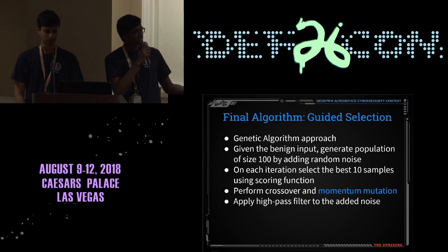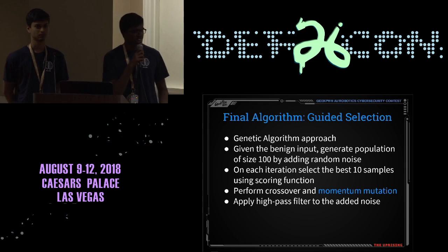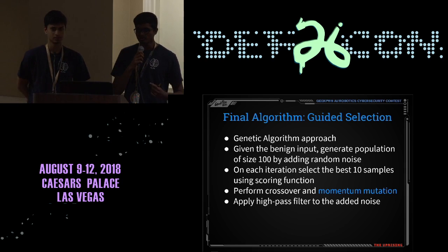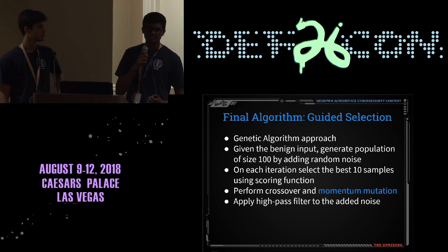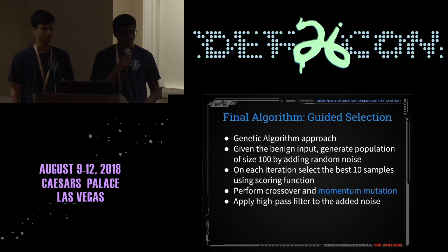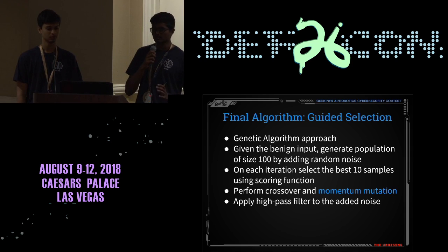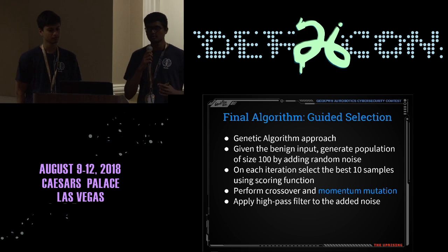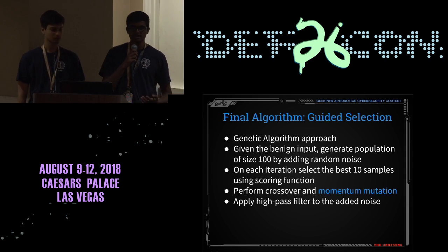Our final algorithm is a guided selection genetic algorithm approach. A genetic algorithm is rooted in evolutionary theory. We start with the benign input and generate a population of size 100 by adding random noise to the original input. Then in each iteration, we score every sample in the population, pick the best ones, and use those high-scoring samples to create a new population in the next generation. Over time, we keep getting better and better samples until we can fool the model.